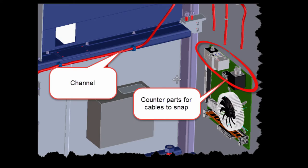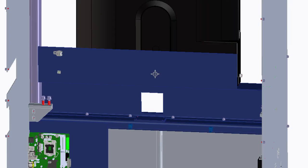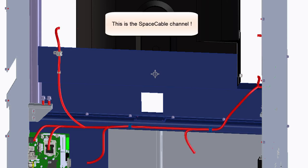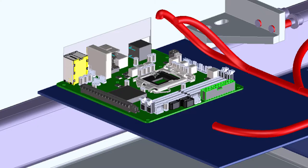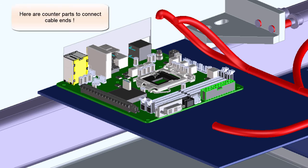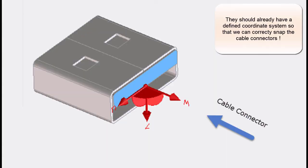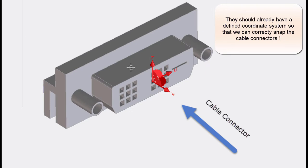You also need the channel and the counterparts for snapping. The channel is created as usual with Creo Space Cable. You also need to position your counterparts, because we have to connect the cable ends to them. The counterparts must have a certain coordinate axis defined, as shown in the slide.